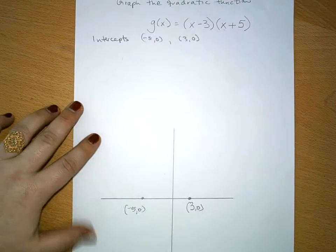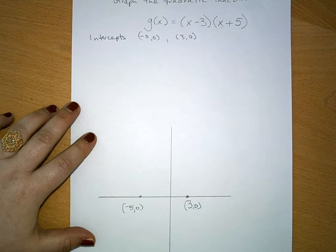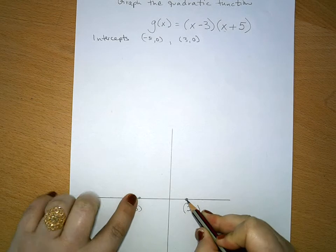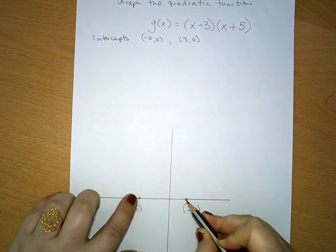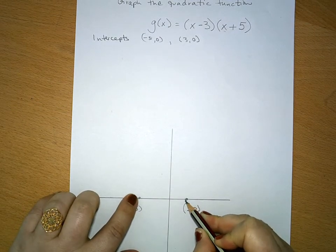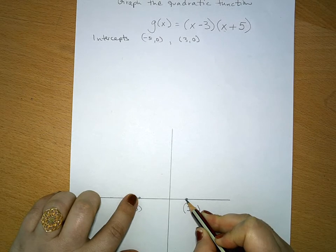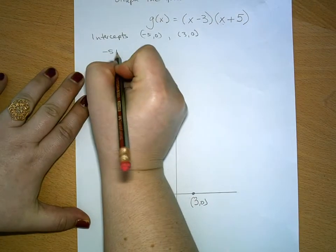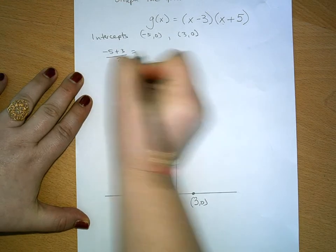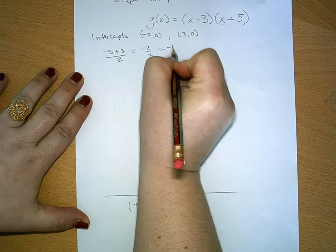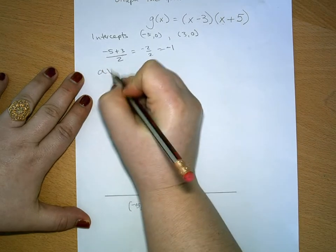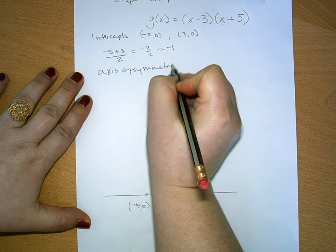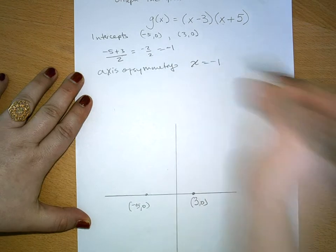Now, in order to find the axis of symmetry next using the intercepts, we know that any two points on a parabola are going to be equidistant to the line of symmetry. So that means we need to find the average of these two points. So the axis of symmetry is going to be at x equals negative 1.